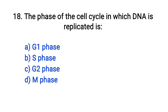Question number 18. The phase of the cell cycle in which DNA is replicated is: G1 phase, S phase, G2 phase, M phase. The right answer is option B: S phase.